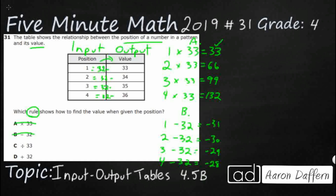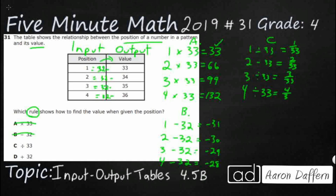And then option C — inputs 1, 2, 3, 4 — and we're going to divide by 33. Dividing by 33 is going to get you some really strange long decimals. In fractional notation: 1 divided by 33 is 1 thirty-third, 2 divided by 33 is 2 thirty-thirds, 3 divided by 33 is 3 thirty-thirds. That is not anything like what we're looking for.